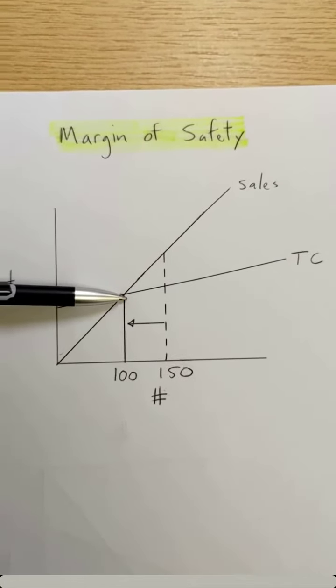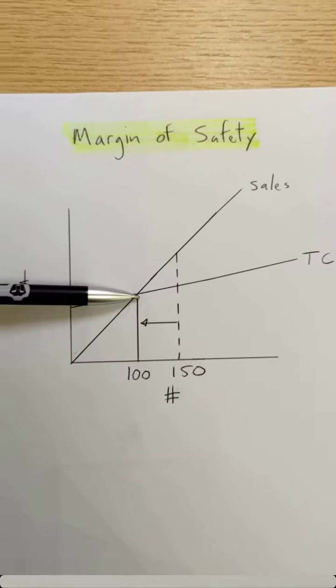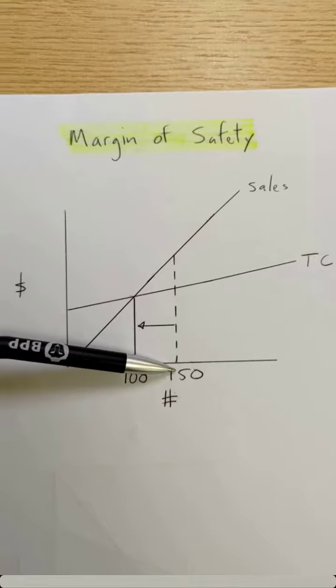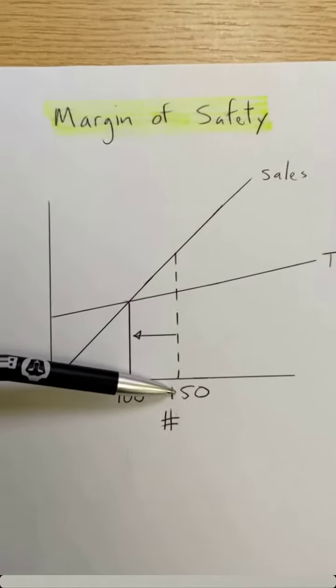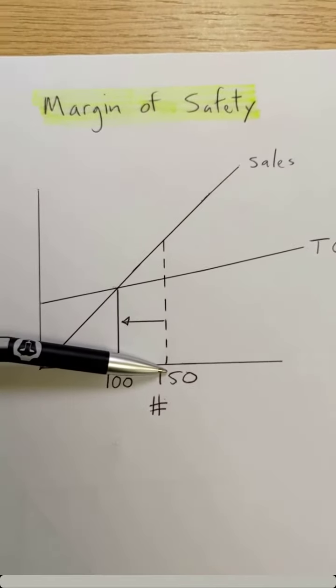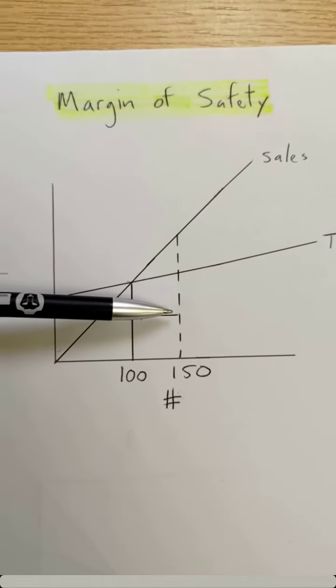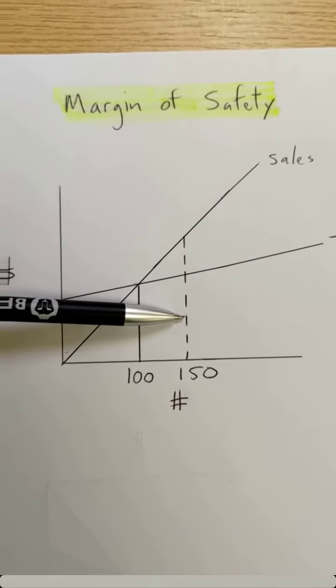my total costs. I'm not in profit, I'm not in loss. 100 units is my break-even point. My current activity is 150. Margin of safety lets me understand risk. Margin of safety is the drop from my current or budgeted